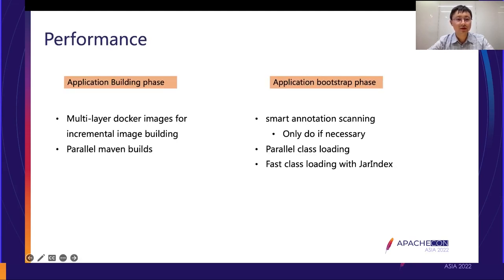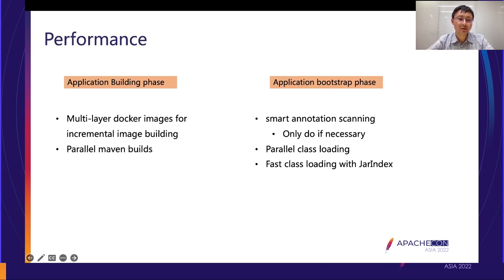Let's talk about performance improvement. I divide it into two phases: the application build phase and the application bootstrap phase. In the build phase, we use multi-layer Docker images for incremental builds. Not all parts of a web application change with every update — usually only a small part changes. So when building the Docker image, we only rebuild the changed part using multi-layer Docker images, making incremental builds very fast. We also use the parallel Maven build technique, and the latest Maven provides a daemon feature allowing modules to build simultaneously in parallel.